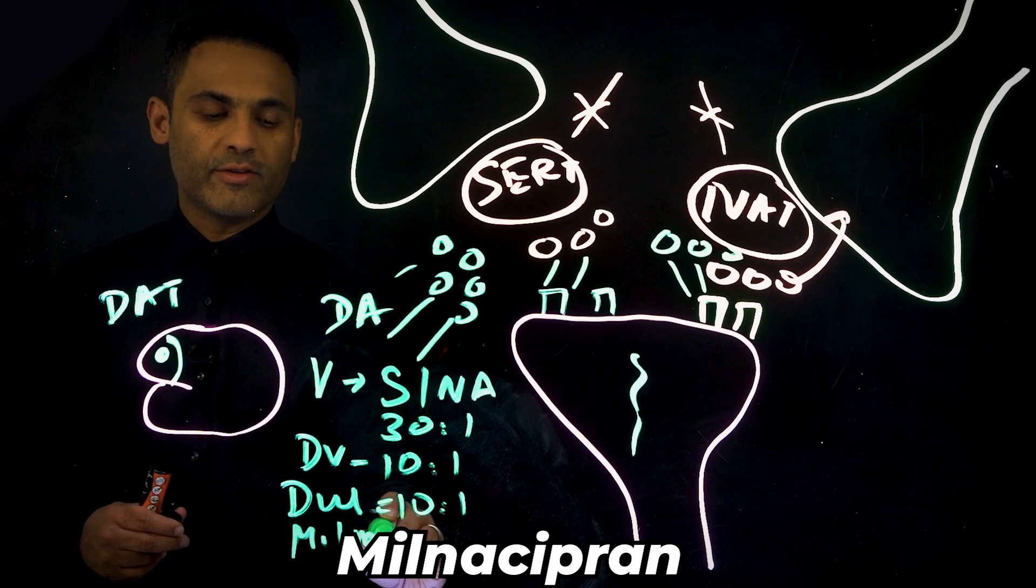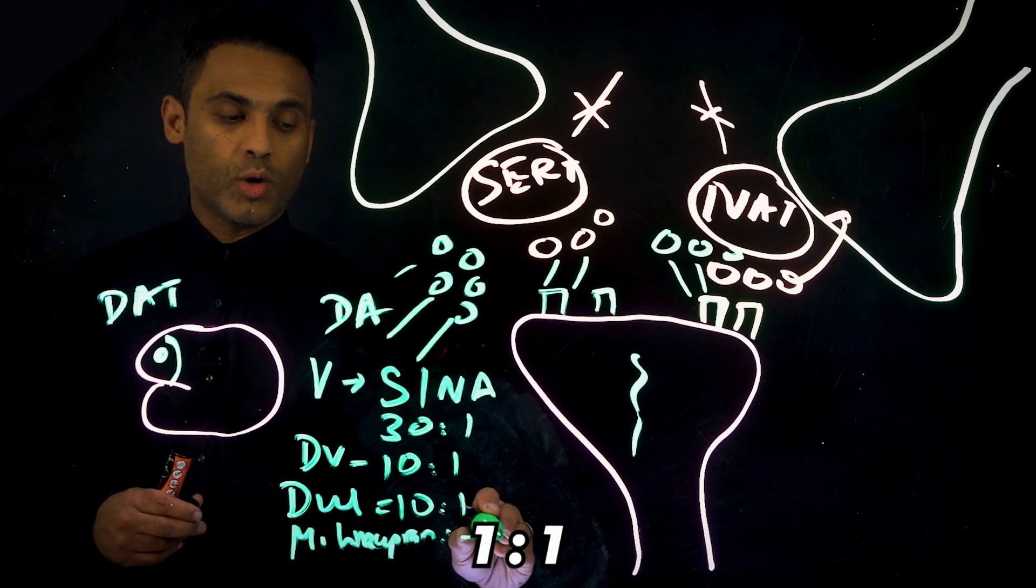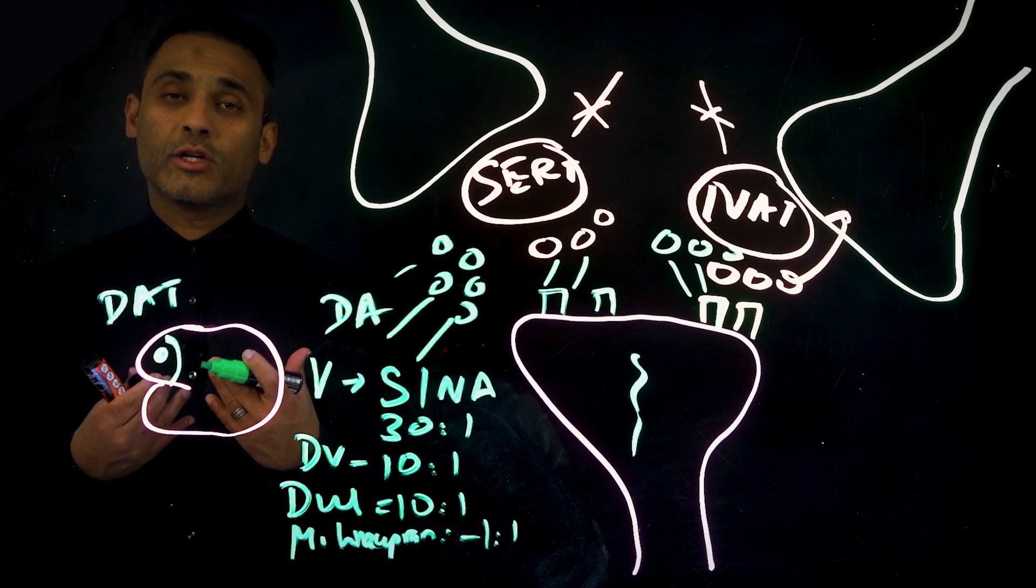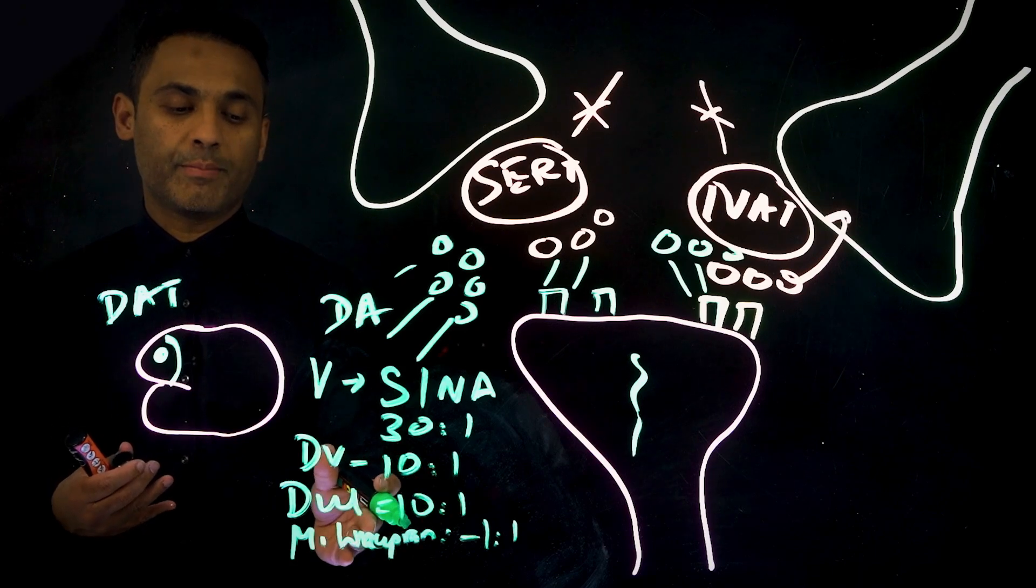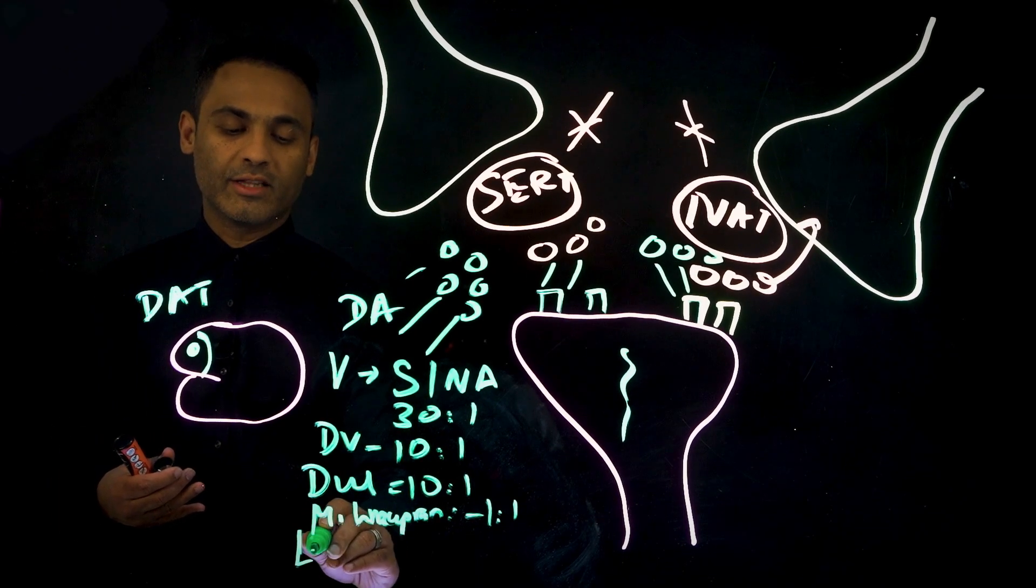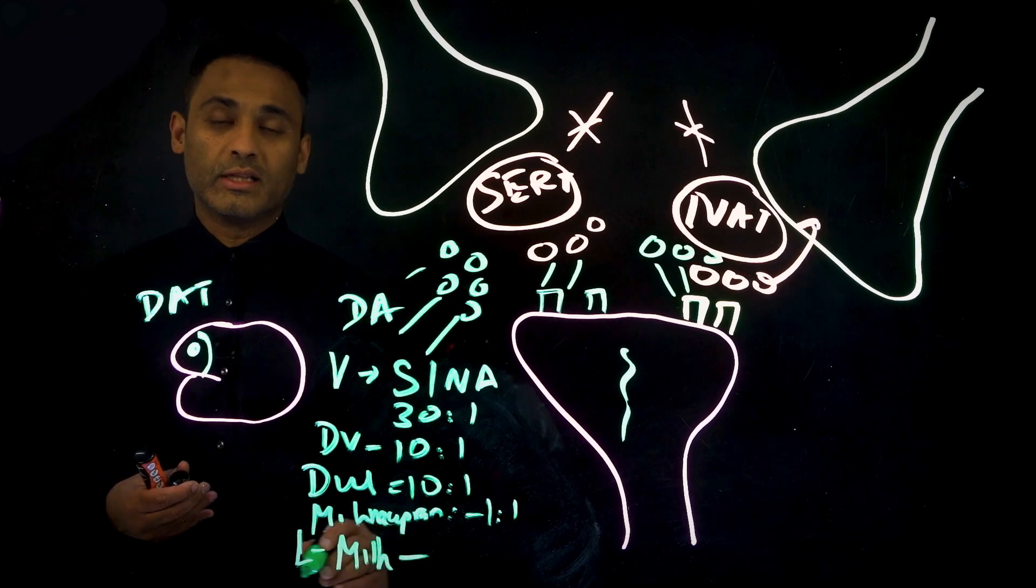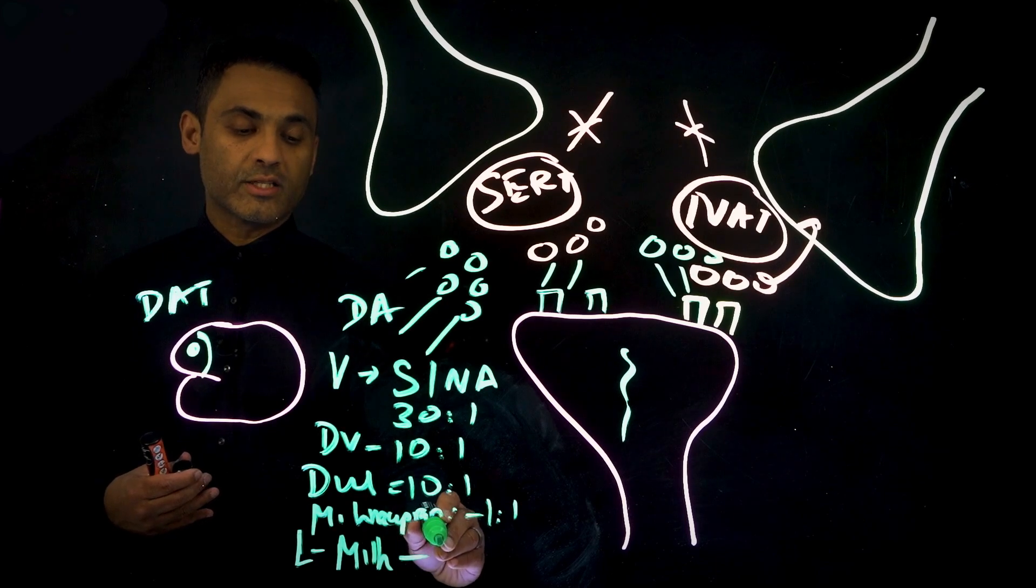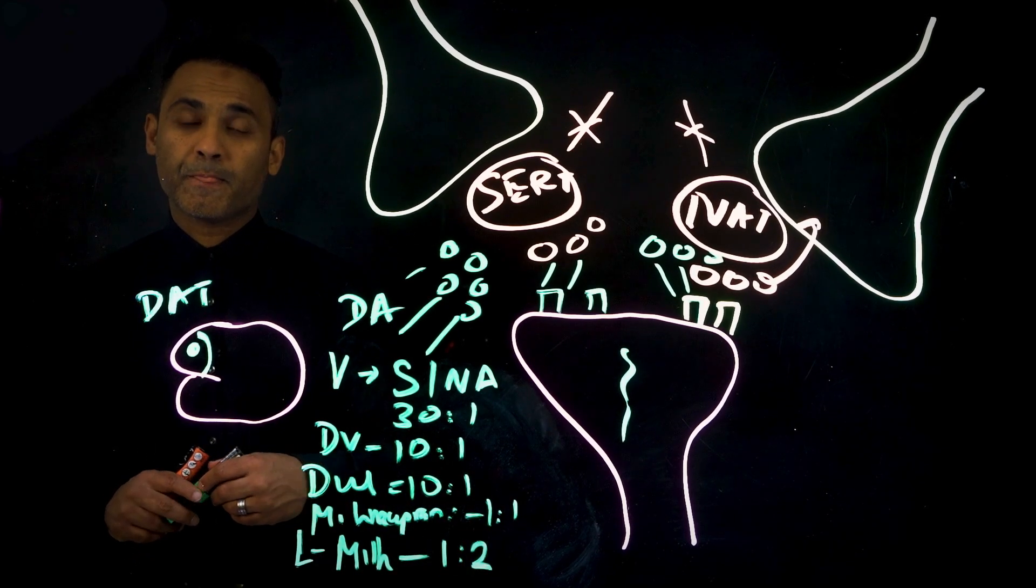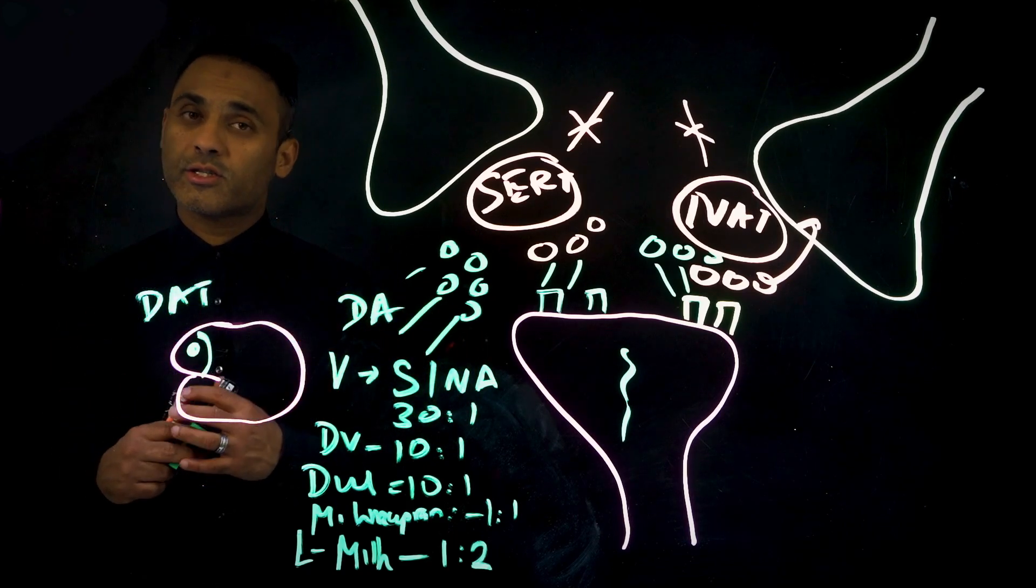Milnacipran, which is evidence-based in the treatment of fibromyalgia - and you can see why - is 1 to 1. So we've got quite a significant noradrenergic activity coming up with milnacipran as compared to duloxetine. And finally we have levomilnacipran, and with levomilnacipran it is 1 to 2. So again it's more towards noradrenergic property than serotonergic.